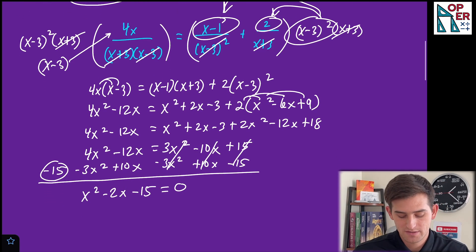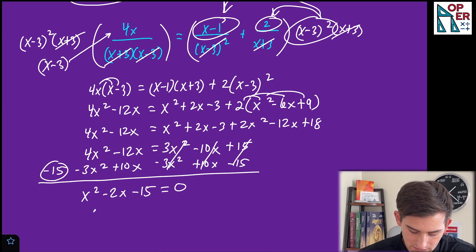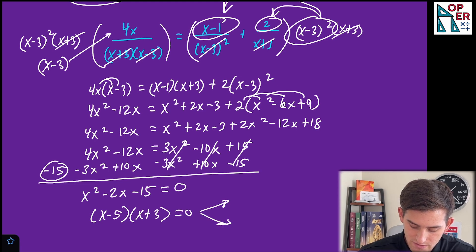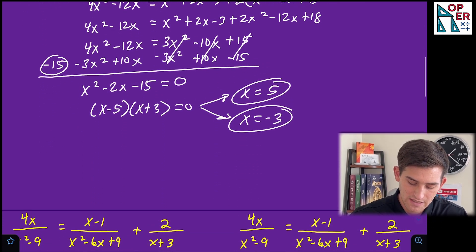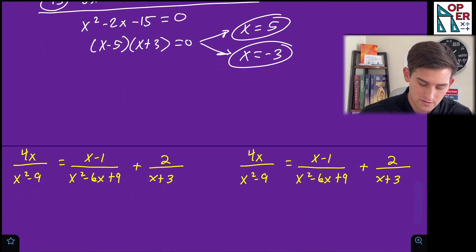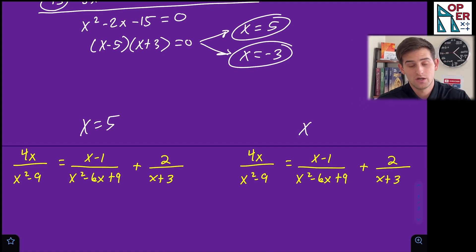So now let's see if we can factor this. What adds to negative two and multiplies to negative 15? Well, that's going to give us X minus five times X plus three. So using the zero product property, we can set each of those equal to zero and get X is equal to five and X is equal to negative three. So these are our two apparent solutions. So now what we should do is take them and plug them into our initial equation.